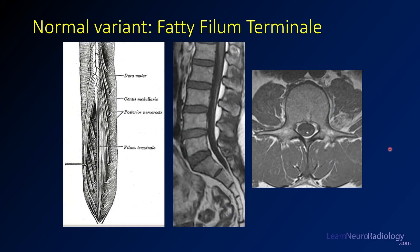A normal variant that can look similar is the fatty filum terminale. On T1 you see a thin linear T1 hyperintense structure along the filum terminale. On axial images it almost looks like a nerve root, but it's T1 bright or fatty. This is a normal variant that appears in quite a number of people and is relatively common, so don't necessarily call all of those lipomas.